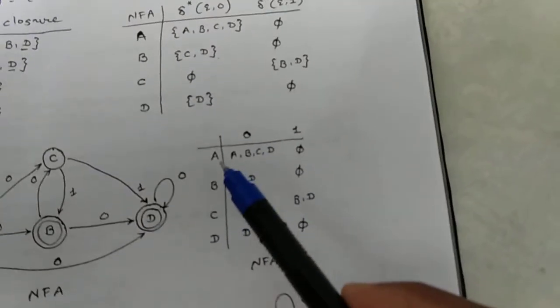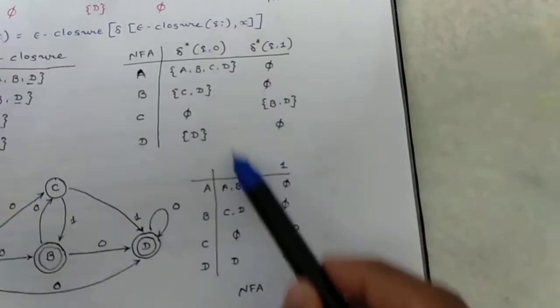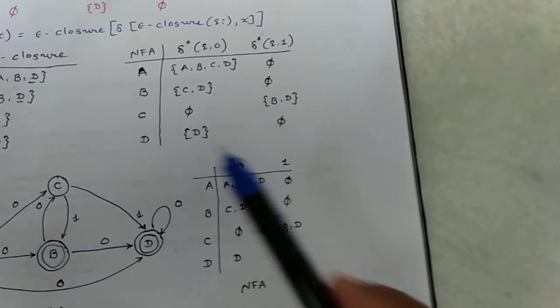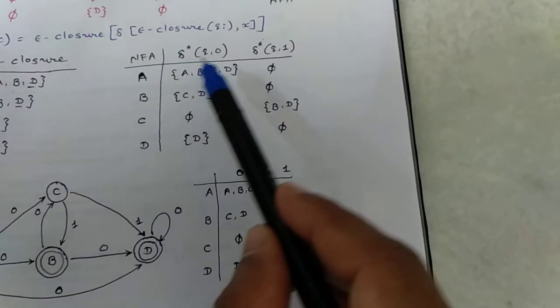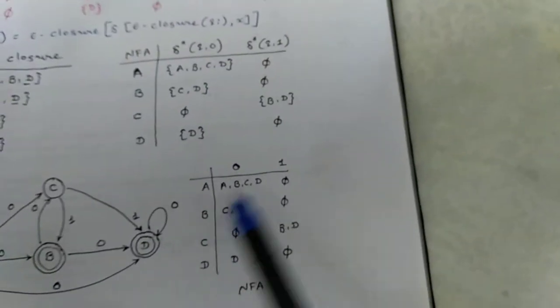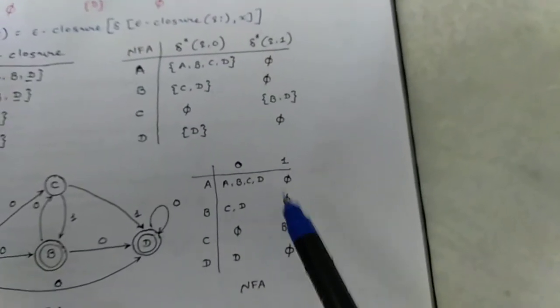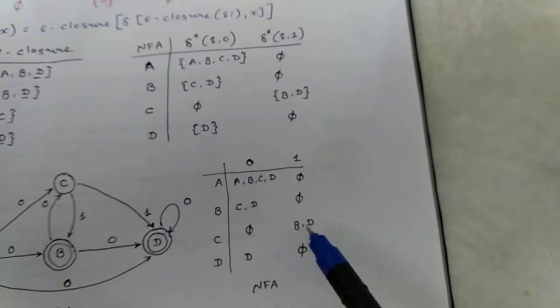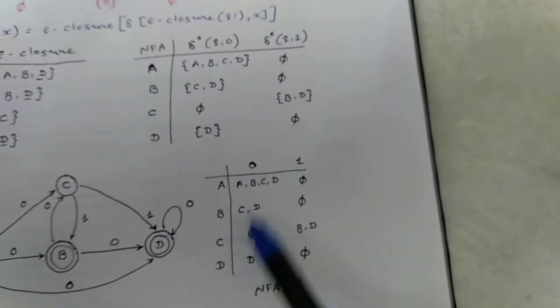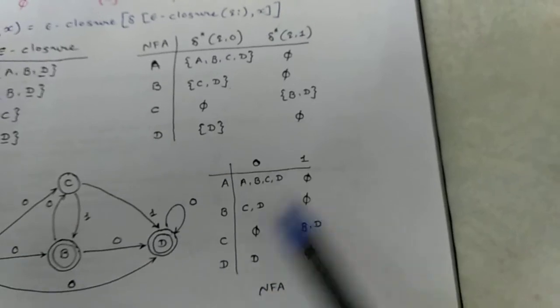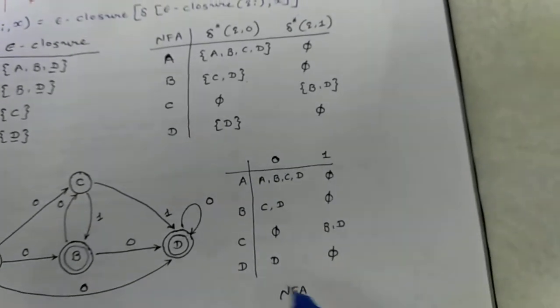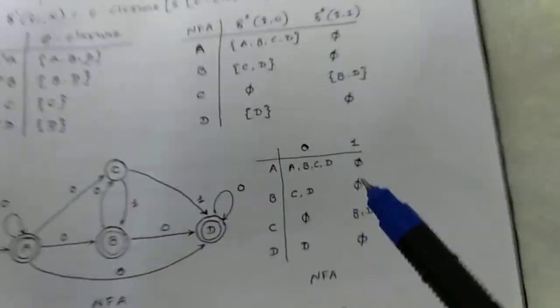Now for the NFA transition table: A on 0 gives {A,B,C,D}; A on 1 gives empty. B on 0 gives {C,D}; B on 1 gives empty. C on 0 gives empty; C on 1 gives {B,D}. D on 0 gives {D}; D on 1 gives empty. According to this transition table, draw the NFA.